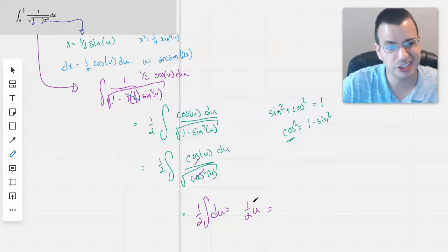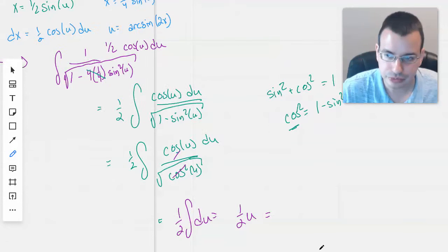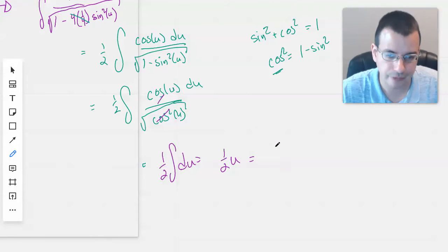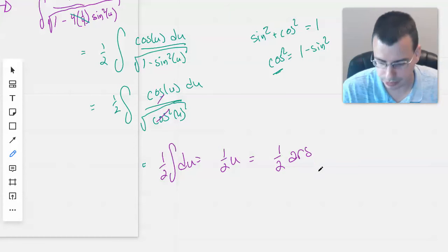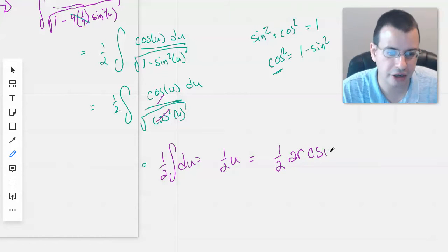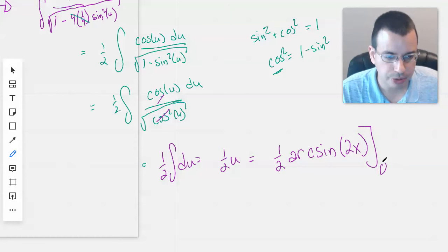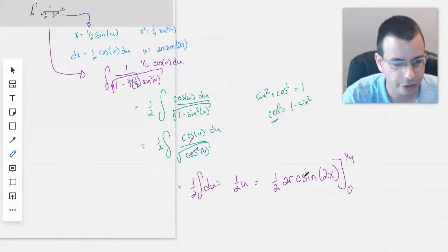So we know that u is arc sine of 2x. U equals one half arc sine of 2x. Now that we're back to x, we can put the limits of integration back in. I think it was one fourth, zero to one fourth. Okay.